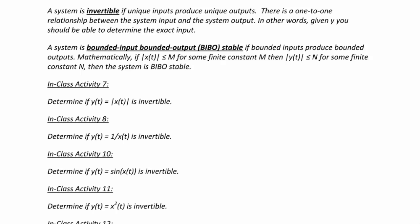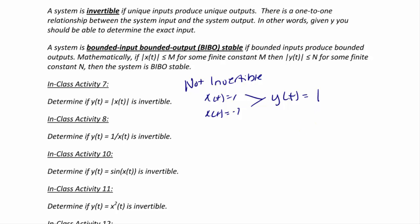Determine if y(t) = |x(t)| is invertible. If x(t) = 1 or x(t) = −1, both produce y(t) = 1, so you can't determine the input from the output — this system is not invertible. For y(t) = 1/x(t), there is a one-to-one relationship: if x = 1 output is 1, if x = −1 output is −1, so this system is invertible.